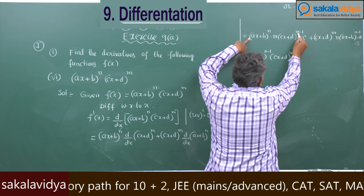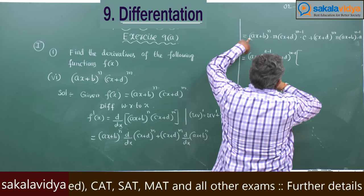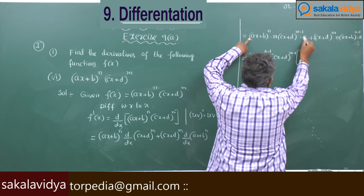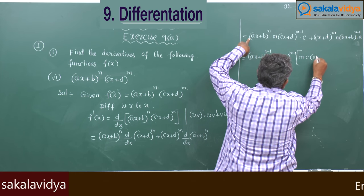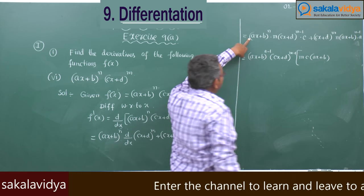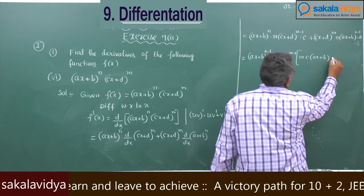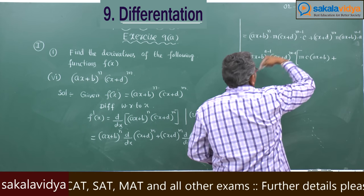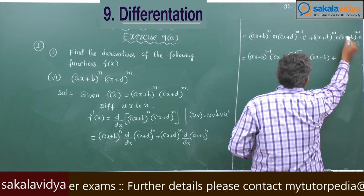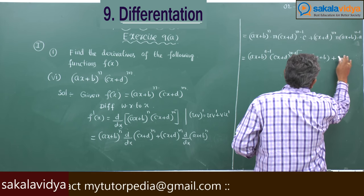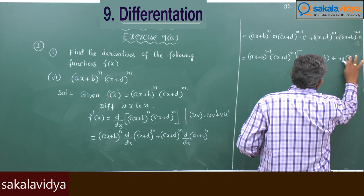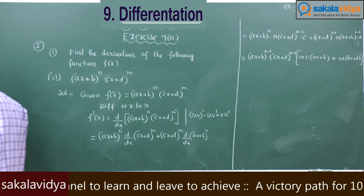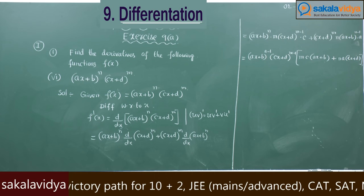Now, let us take (ax+b)^(n-1) and (cx+d)^(m-1) as common factors. After taking them out, we have (ax+b)^(n-1)·(cx+d)^(m-1) times [mc·(ax+b) + na·(cx+d)]. This is the answer. Let us move to the next problem, the seventh problem.